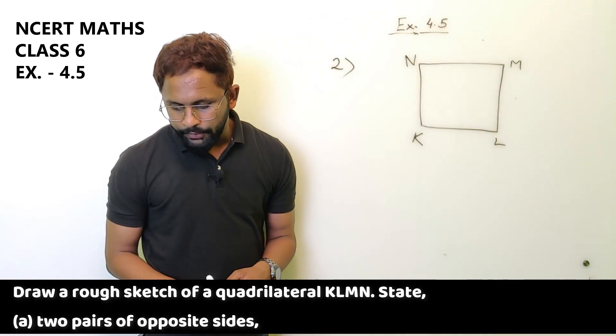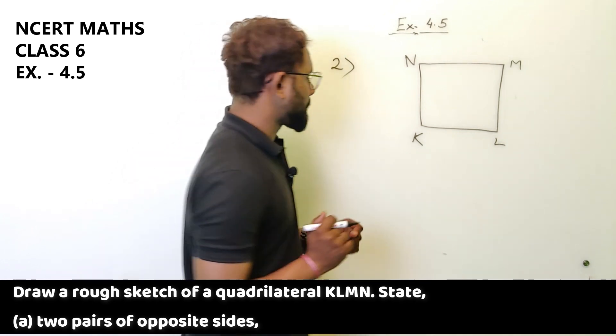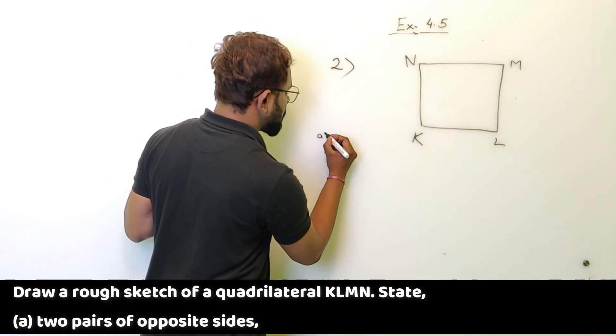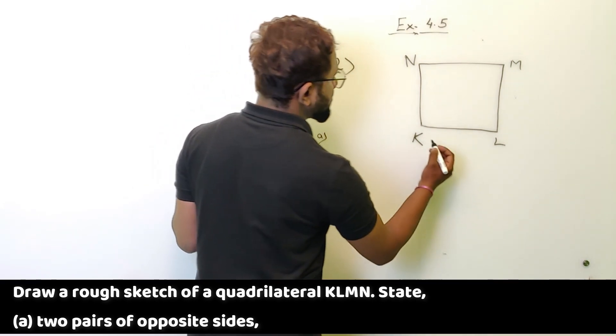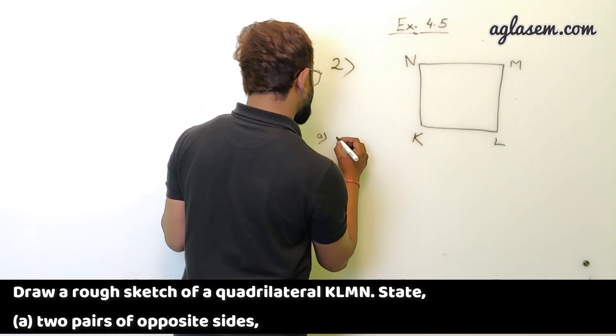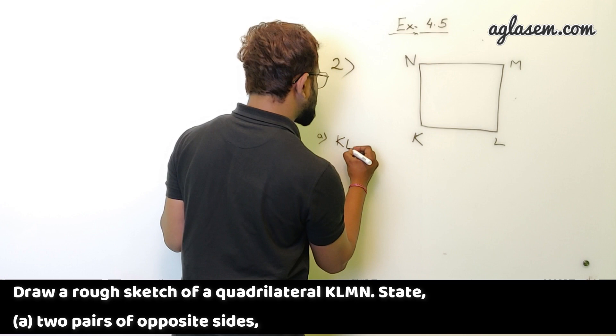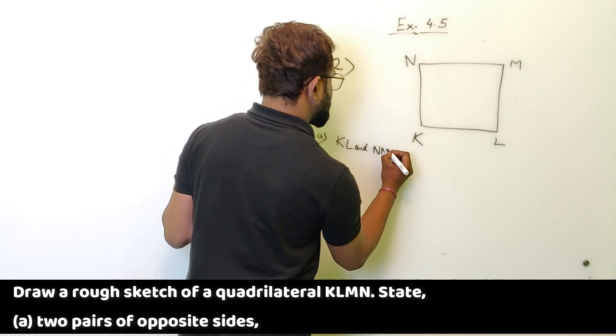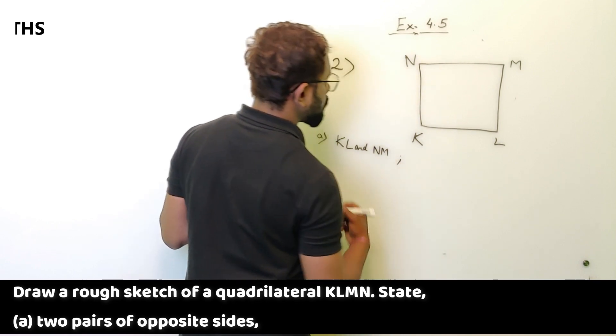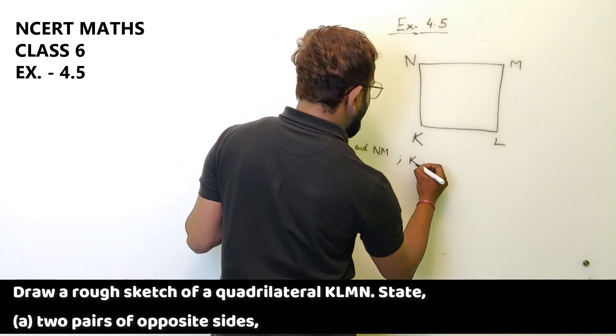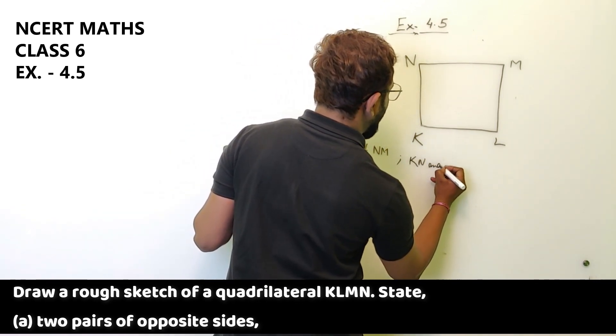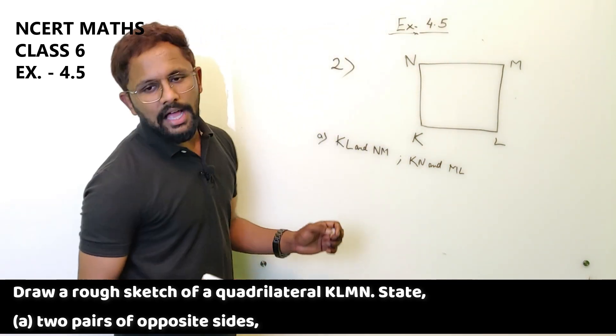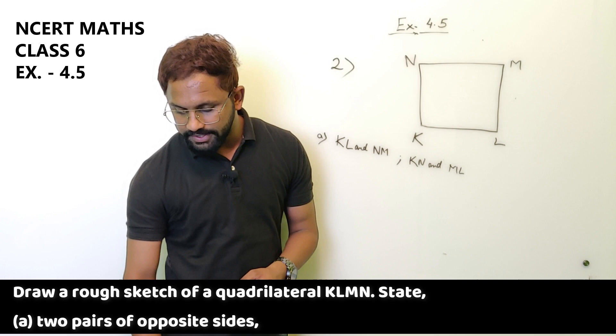The first part is two pairs of opposite sides. We have to name the A part. Two pairs of opposite sides. So the opposite sides are KL and NM, also KN and ML. So these are two pairs of opposite sides.